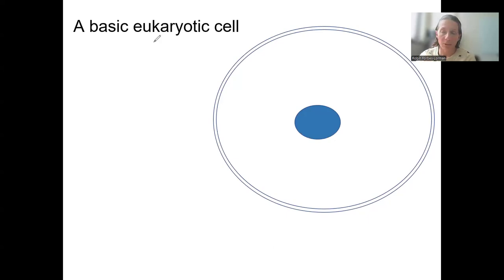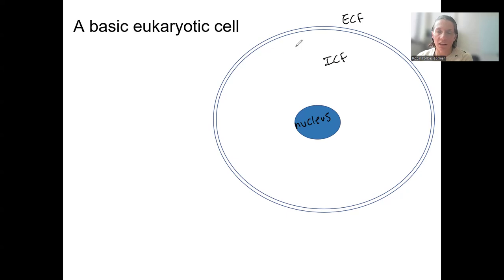You could probably label the components here: nucleus, intracellular fluid, extracellular fluid, and then here, of course, is our plasma or cell membrane.